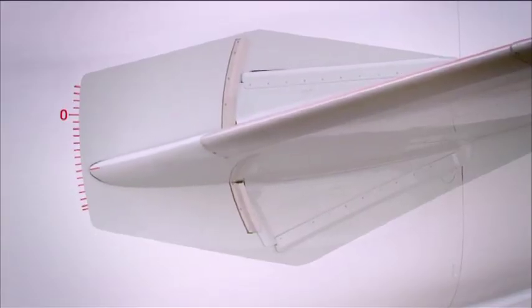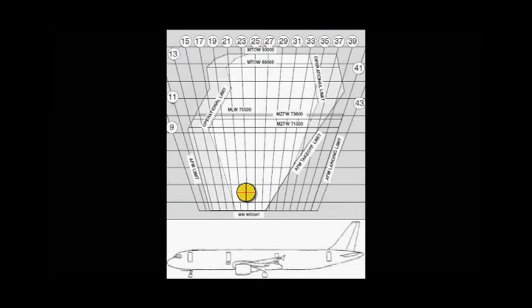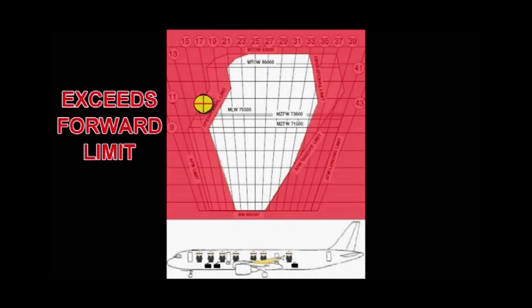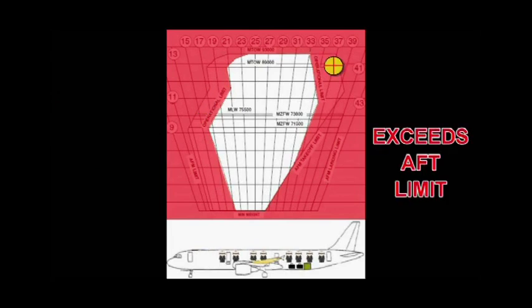Starting with an empty aircraft, watch and see how load affects the C of G as it is added. First the fuel, followed by a full load of passengers, then we add a typical standard baggage load. That gives us a fairly normal C of G, nicely within the safe flight envelope — good to go. However, if an aircraft were partially or incorrectly loaded with an excess of load in the front, this could happen. And if there were excess in the rear, this could be the result. Finally, undeclared or too much load may do this.